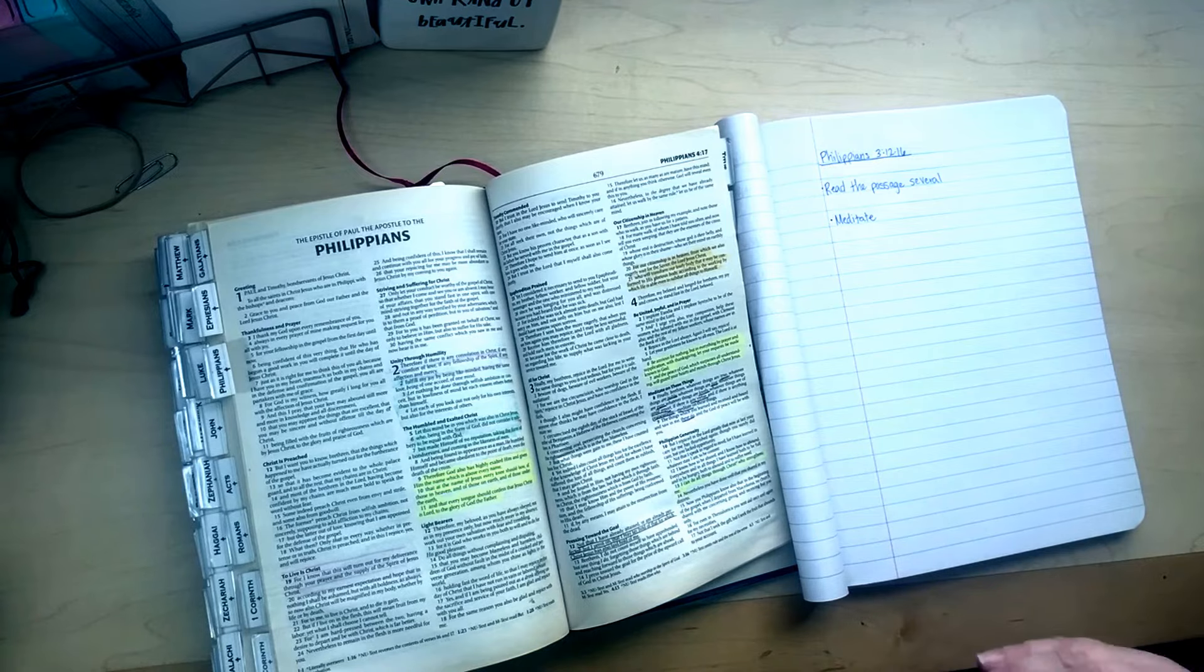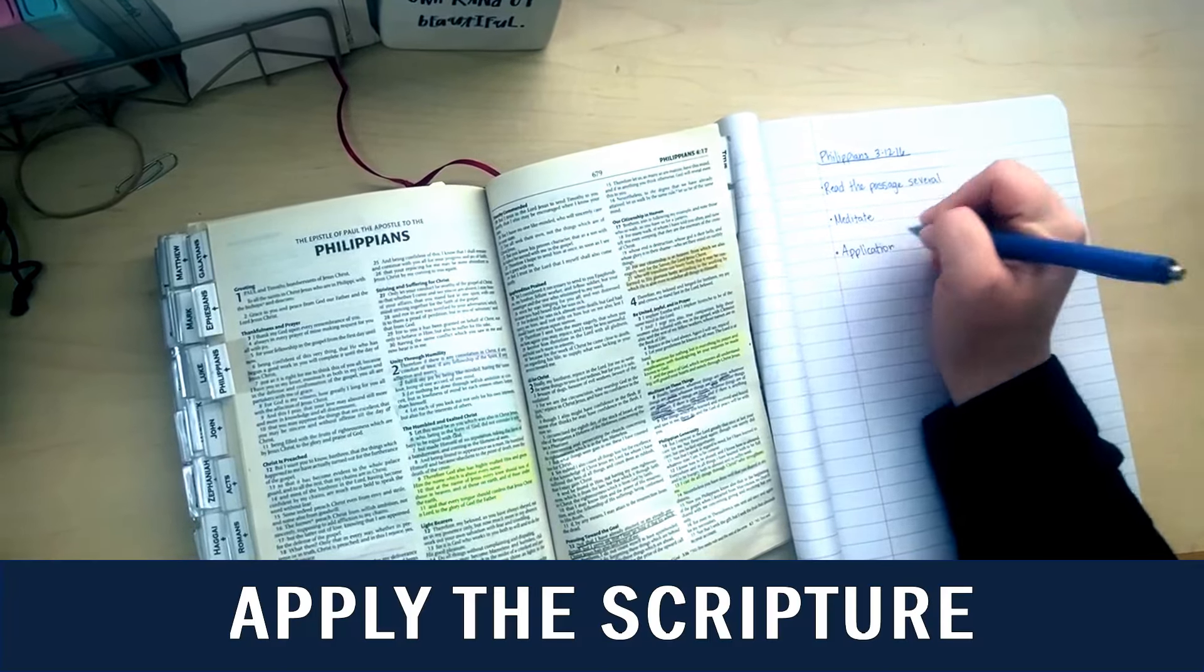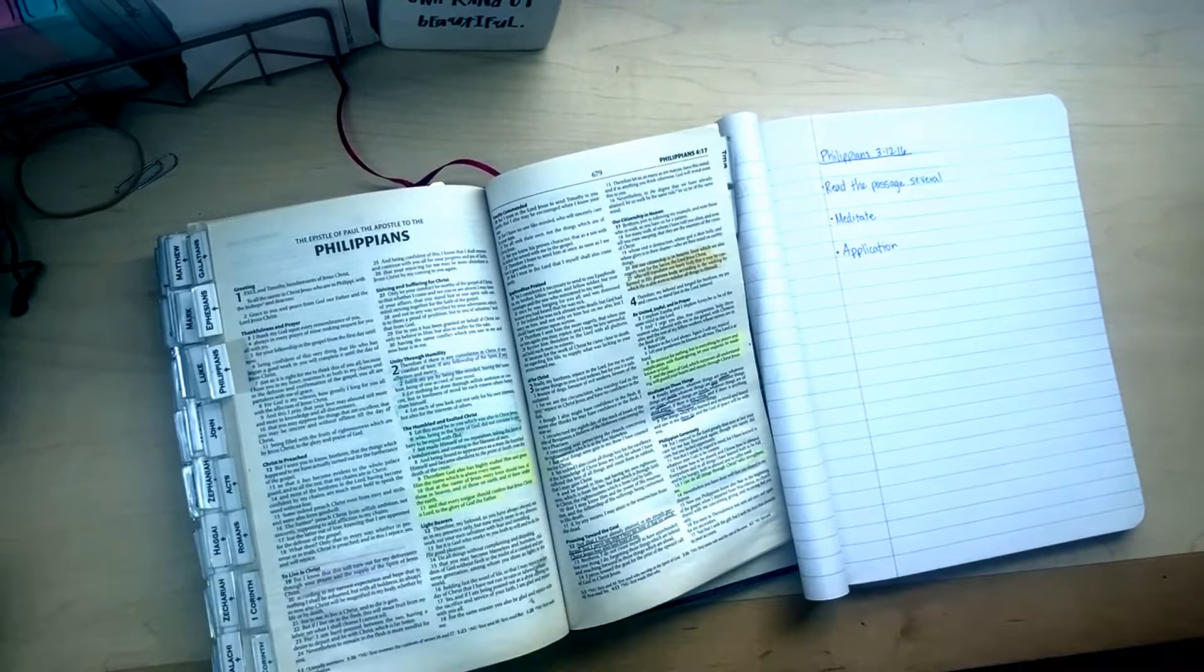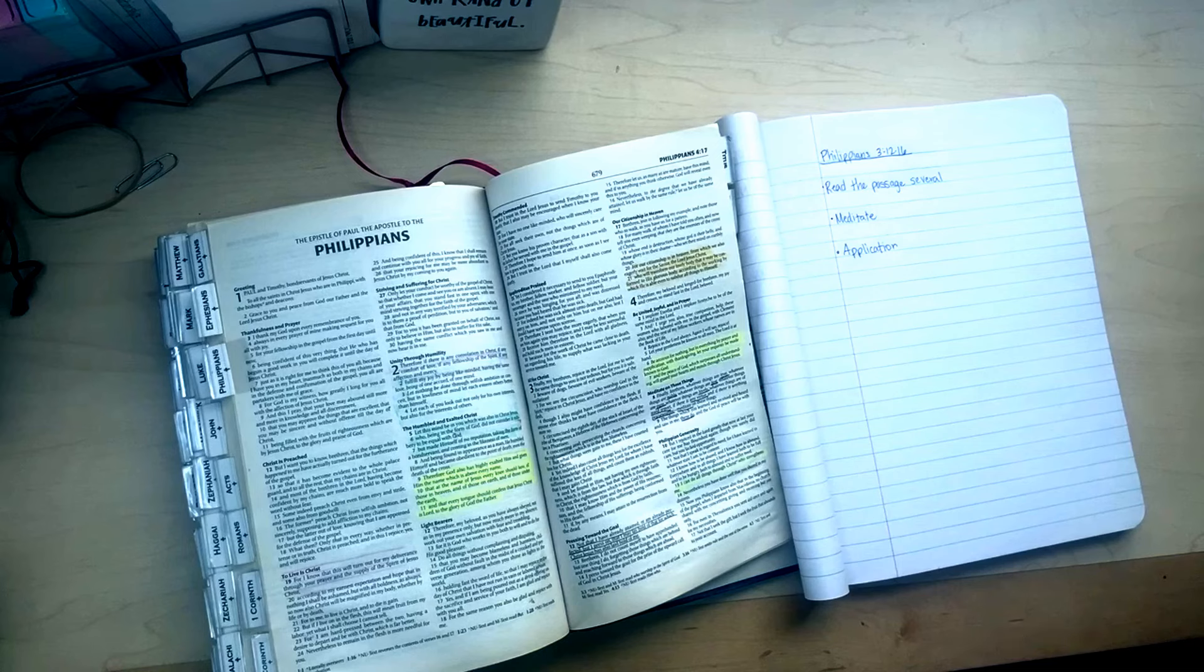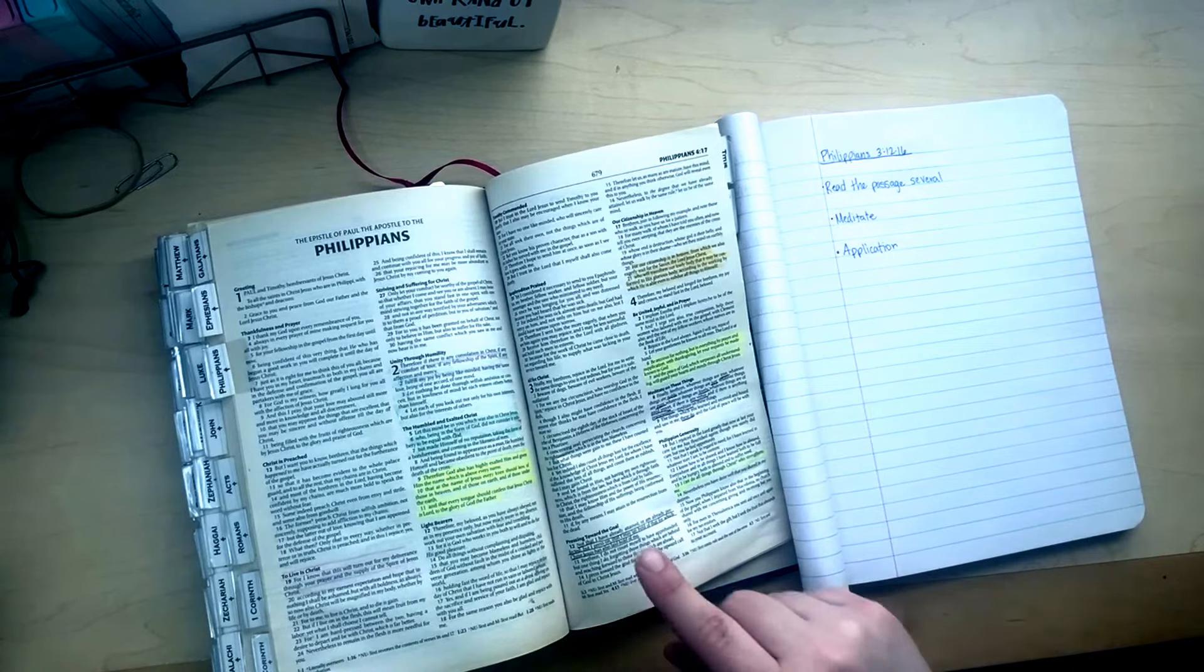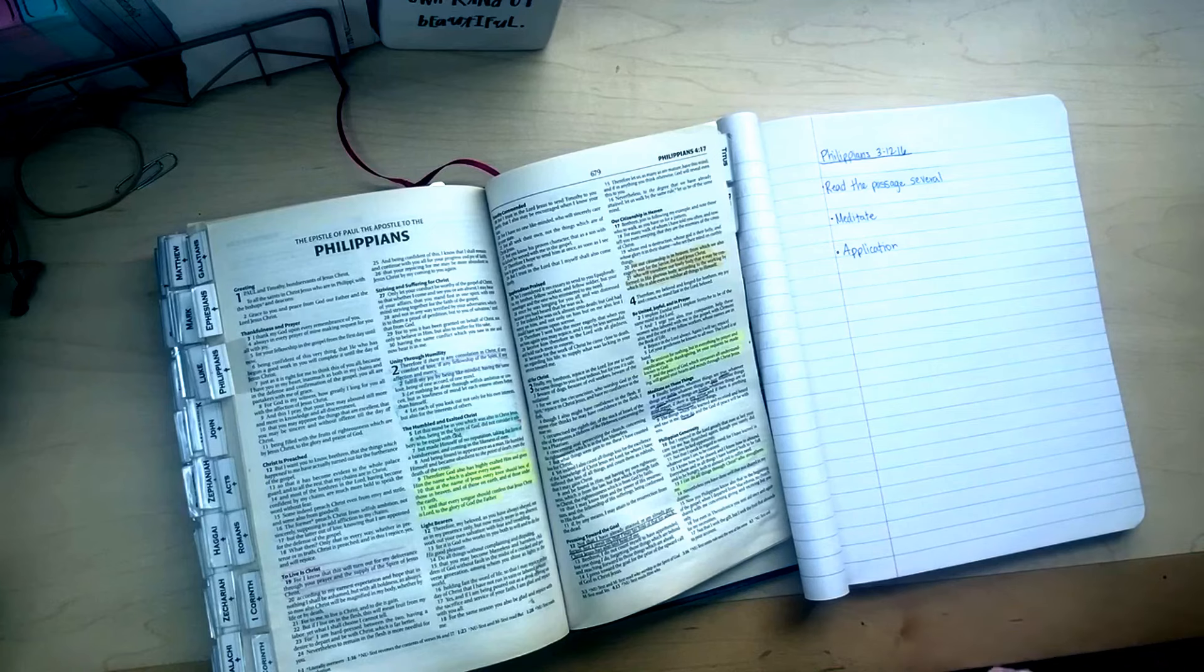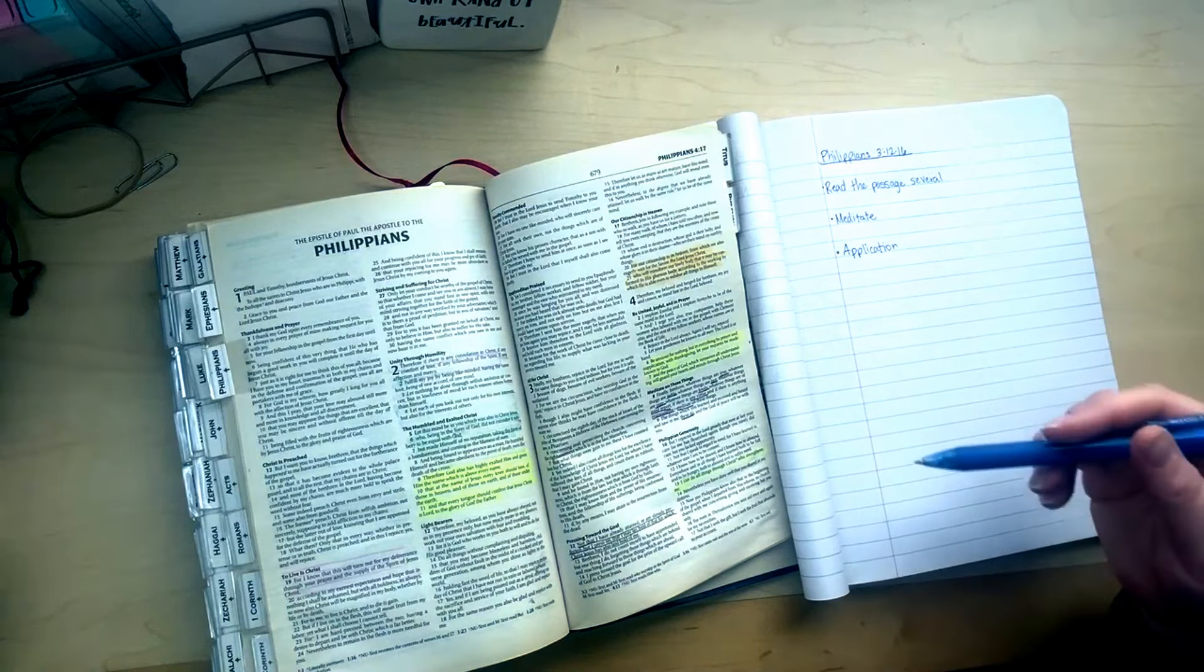After I have done the meditation part, the next piece is application. So application is when you need to see what the Holy Spirit is revealing to you about how to apply this to your life. And that's when you can go back to the meditation. What is God revealing? Are there instructions or commands or sins that need to be confessed or attitude that needs to be changed? How can you apply that to your life? How can you apply this scripture to your life? And that's why you have to go to the Holy Spirit and ask the Holy Spirit to reveal that to you and then start writing out what the Holy Spirit is revealing to you and how to apply it to your life.